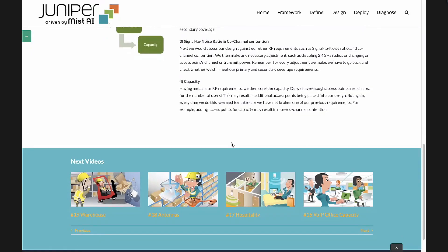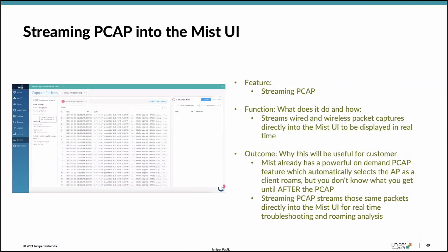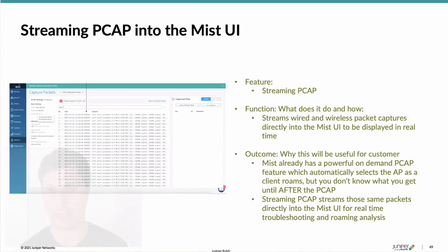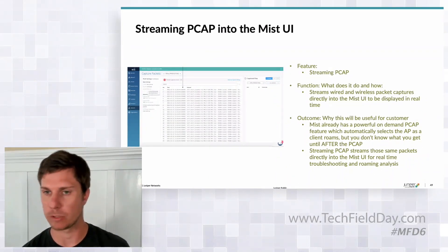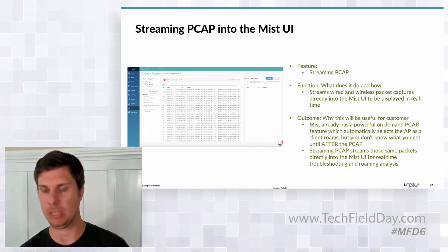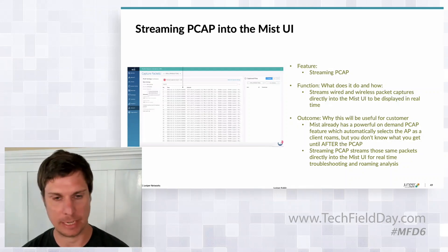Sam, I apologize it took a while to get this out, but I hope the community finds it valuable. Now I want to spend a little time on how MIST architecture enables differentiation. We're a cloud-based vendor — everything we do is cloud-based. It's our microservices cloud architecture that enables us to do new things easily and quickly. One new thing coming is called streaming PCAP.